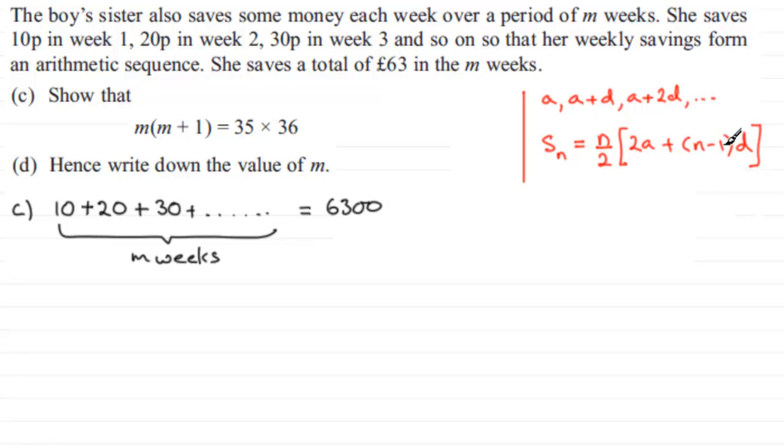So what we've got here is the sum of the first m terms, S_m, if you like. So we've got therefore S_m equals 6,300. So all we need to do is replace the n here with an m.